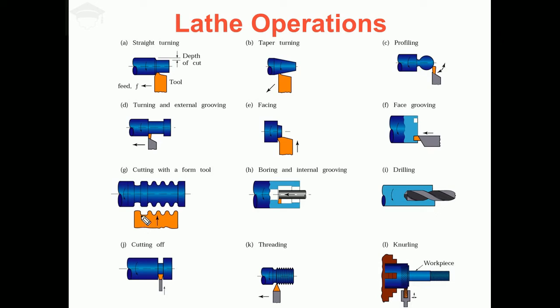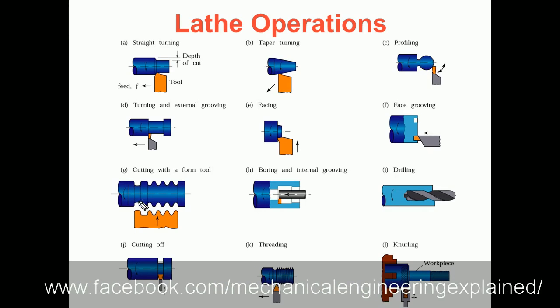Next comes cutting with a form tool. The form tool is a special type of tool that is custom machined or custom designed, made up of high carbon carbides. We push the tool onto the workpiece and it produces the mirror image of the tool profile on the workpiece.